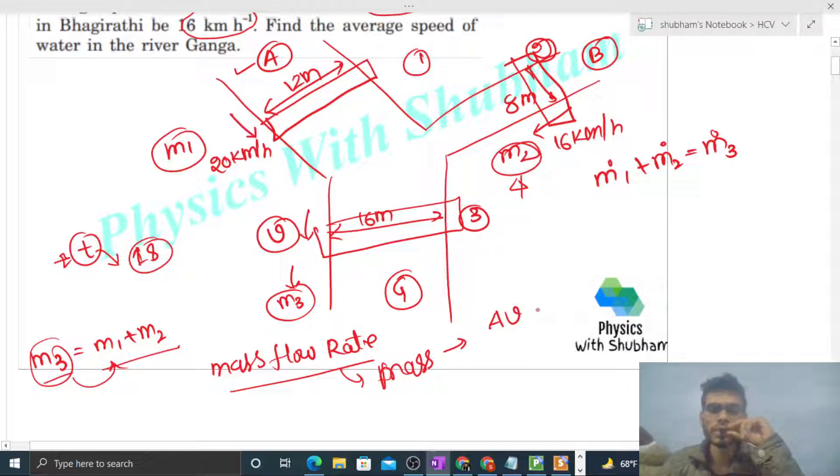Mass flux is nothing but cross-sectional area times speed, or you can say average speed times density of water. If we talk about the first cross section, that is Alaknanda, the cross-sectional area will be width 12 times depth d, where d is the depth of water in this river. So cross-sectional area times average speed, that is 20, times density of water ρ.